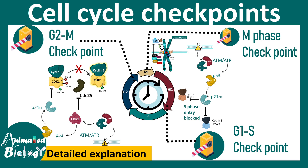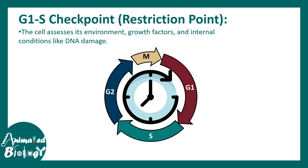In this video we'll be talking about cell cycle checkpoints. This is a quite detailed video so stay tuned till the end and you'll get a total explanation about cell cycle checkpoints. There are three cell cycle checkpoints that we are going to talk about: these operate in G1/S transition, G2 to M transition, and within the M phase.